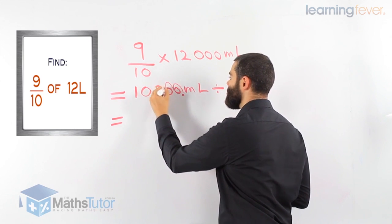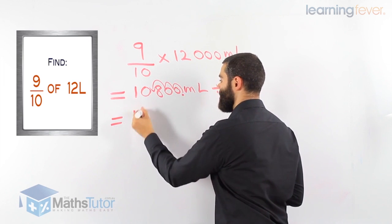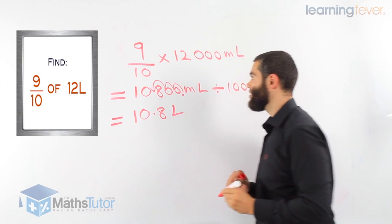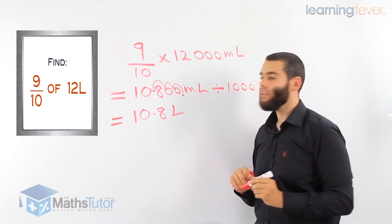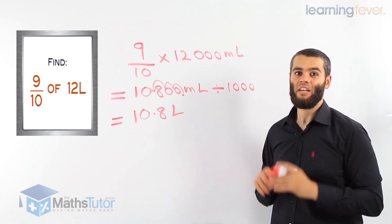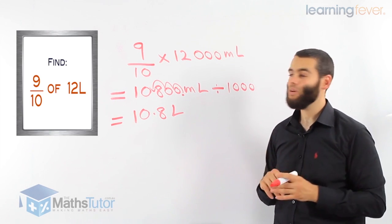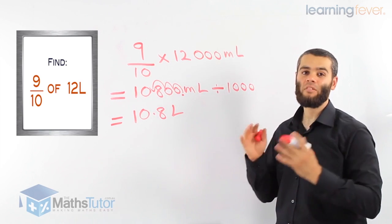10,800 millilitres divide by 1,000. We know our point is there. We move it 1, 2, 3 times: 10.8 litres. So 9 tenths of 12 litres is actually 10.8 litres. This is the way to find a fraction of any quantity: the fraction times the quantity.